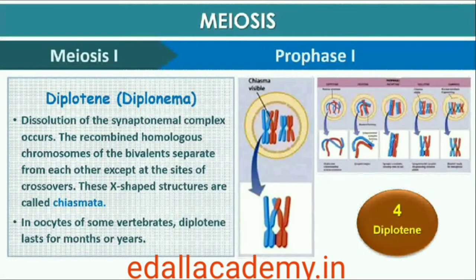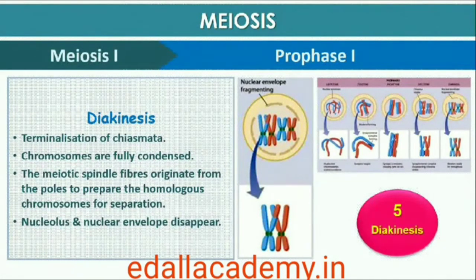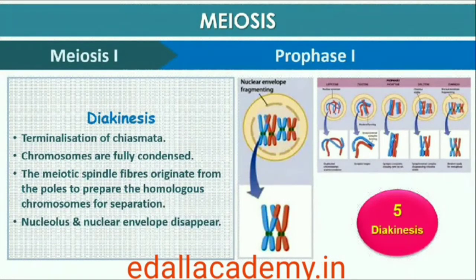The beginning of diplotene is recognized by the dissolution of the synaptonemal complex and the tendency of the recombined homologous chromosomes of the bivalents to separate from each other except at the sites of crossovers. These X-shaped structures are called chiasmata. In oocytes of some vertebrates, diplotene can last for months or years. The final stage of meiotic prophase I is diakinesis, marked by terminalization of chiasmata. During this phase chromosomes are fully condensed and the meiotic spindle is assembled. By the end of diakinesis, the nucleolus disappears and the nuclear envelope also breaks down. Diakinesis represents transition to metaphase.